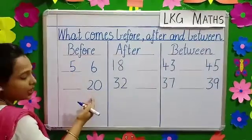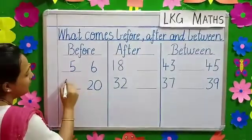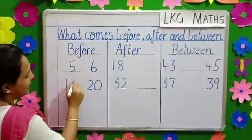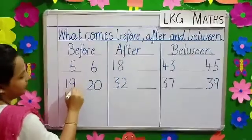Now the next number is 20. Before 20? 19. Very good.